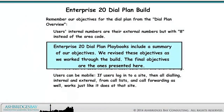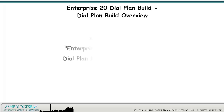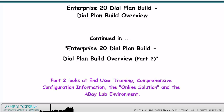Enterprise 20 dial plan playbooks include a summary of our objectives. We revised these objectives as we worked through the build — the final objectives are the ones presented here. This playbook is continued in Enterprise 20 Dial Plan Build, Dial Plan Build Overview Part 2. Part 2 looks at end-user training, comprehensive configuration information, the online solution, and the eBay Lab environment.